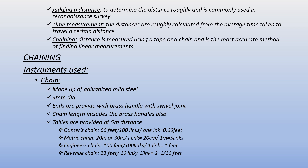There are different types of chains: Gunter's chain, Metric chain, Engineer's chain, and Revenue chain. Gunter's chain is 66 feet long with 100 links, each link being 0.66 feet. Metric chain is available in 20 meters or 30 meters standard sizes with tallies at 5 meters. Engineer's chain is 100 feet long with 100 links, each link being 1 foot. Revenue chain is 33 feet long with 16 links, each link being 2 and 1/16 feet.